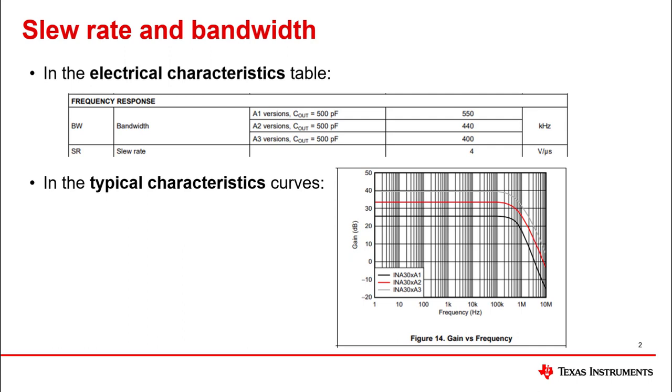Slew rate can be specified for either rising or falling edge, or both, and is normally specified from 10% to 90% of the swing. For bandwidth, the specification is the frequency where the gain drops by 3 dB from the low frequency gain for the small signal response.